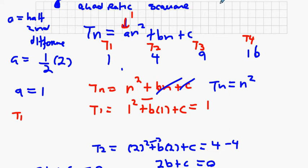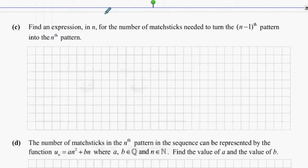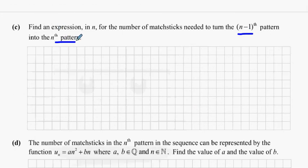t1 equals one squared, four is two squared, t2 equals two squared, t3 equals three squared, and t4 equals four squared. So that's quite easy — and now find an expression for the number of matchsticks needed to turn the (n−1)th pattern into the nth pattern.